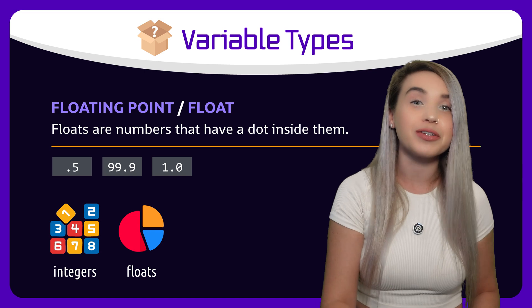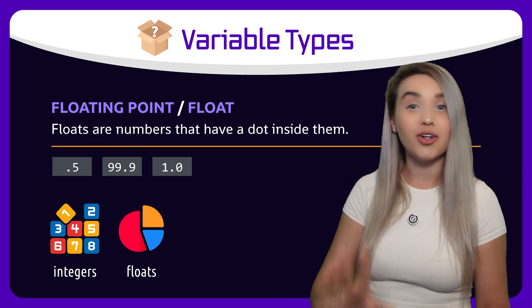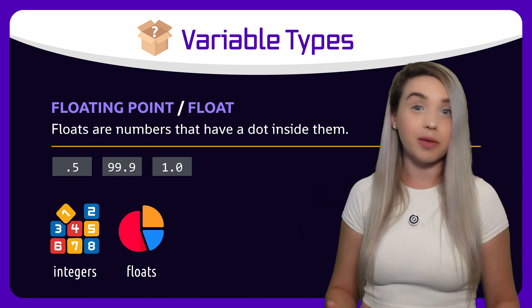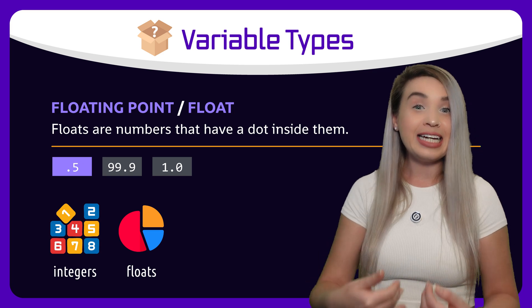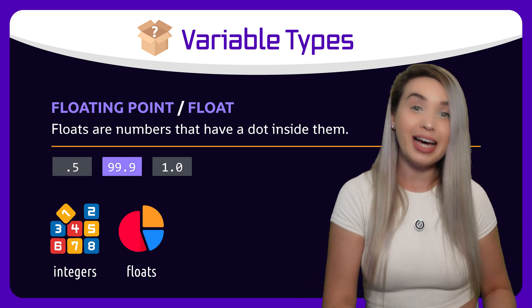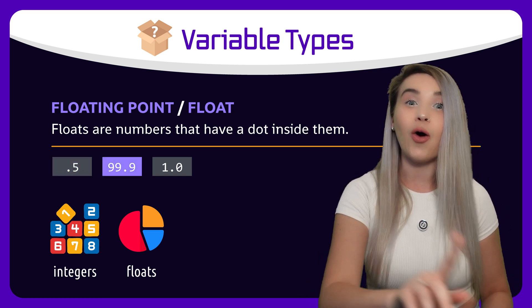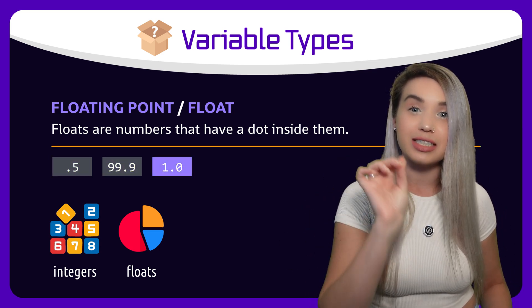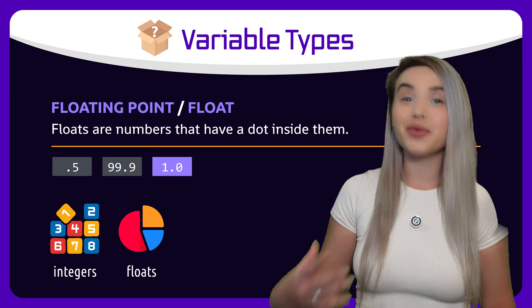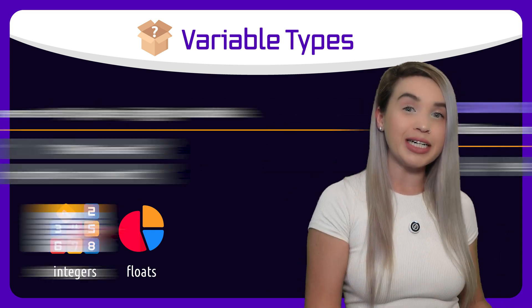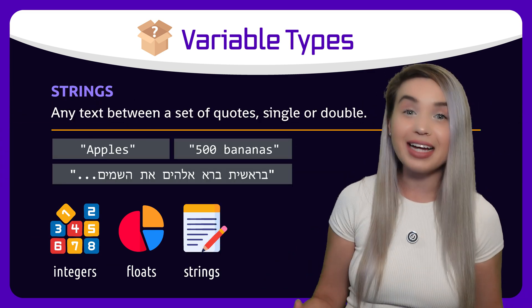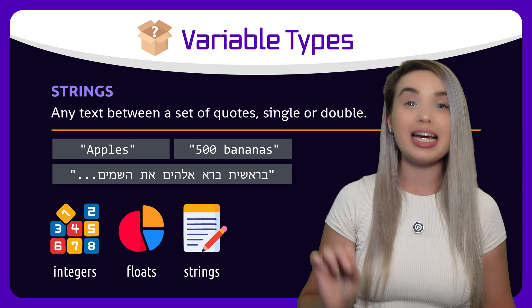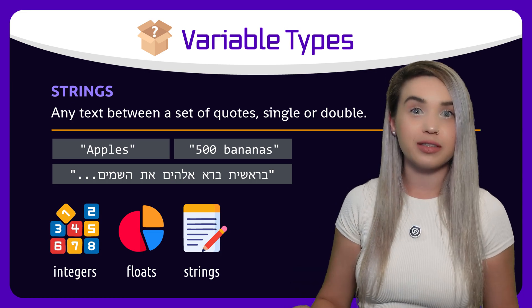which are numbers that have a dot in them. For example, 0.5, 99.9, and even whole numbers like 1.0. We also have strings, or text — more accurately, anything between a set of quotes.